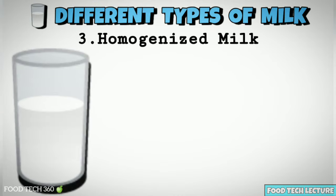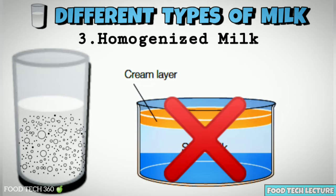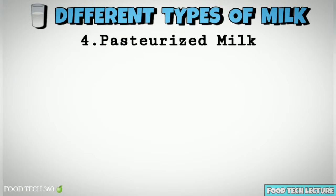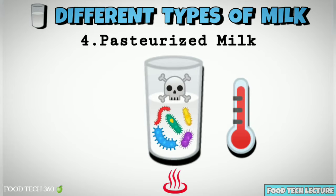Third, homogenized milk. The milk here goes through a process where the fat globules in it are broken, which spreads the fat evenly, preventing the formation of the creamy layer on top. However, the fat content and other factors remain the same. Fourth, pasteurized milk. This milk is heated at a high temperature in order to kill the harmful bacteria without losing out on the flavor or nutritional content of the milk.